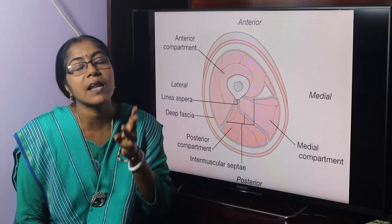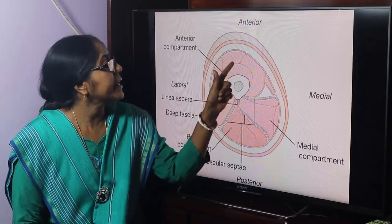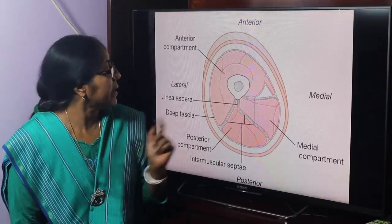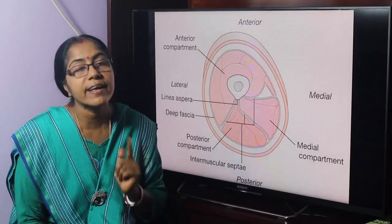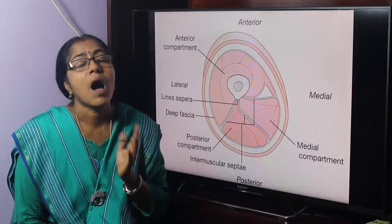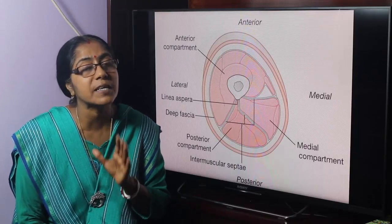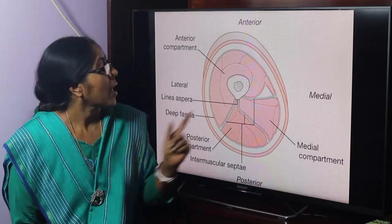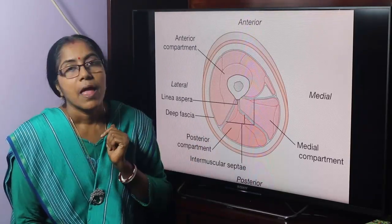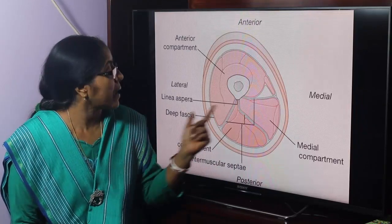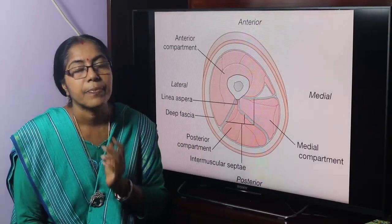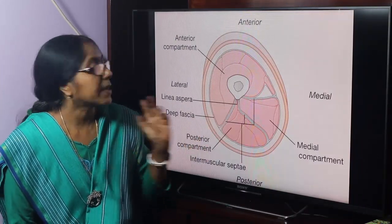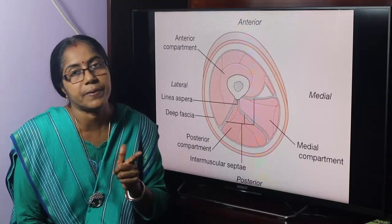What are the fascial compartments of the thigh? There are three fascial compartments: anterior or extensor compartment, medial or adductor compartment, and posterior or flexor compartment. The thigh is divided into three fascial compartments by three intermuscular septa: posterior intermuscular septum, medial intermuscular septum, and lateral intermuscular septum. Among these three, the lateral intermuscular septum is the strongest septum.